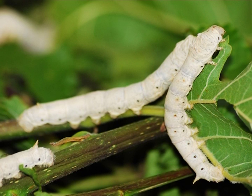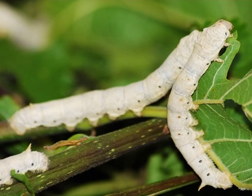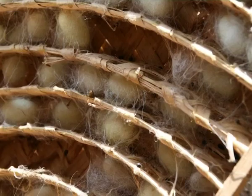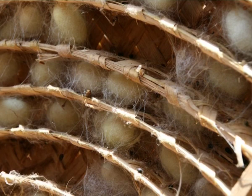Bombyx mori undergoes complete metamorphosis and its life cycle consists of four distinct stages: egg, larva, pupa, and adult. Tropical races complete their life cycle with no dormancy phase and hence pass through five to six generations per year continuously. The temperate races undergo a dormancy period in the embryonic stage of the egg to tide over severe climatic conditions during winter. The silkworm eggs are tiny, weighing about 0.5 milligrams, measuring about 1 to 1.3 mm in length and 0.9 to 1.2 mm in width. They are ovoid, flat, ellipsoid or oval with a micropyle at the anterior pole.